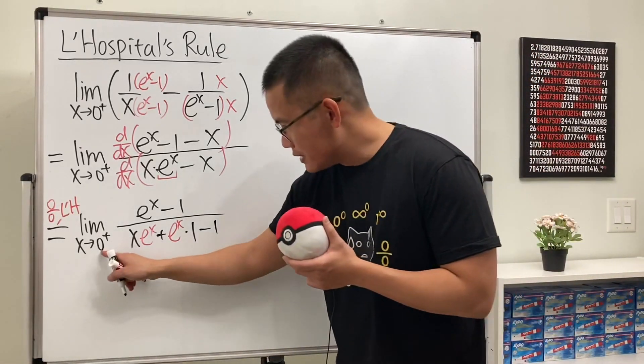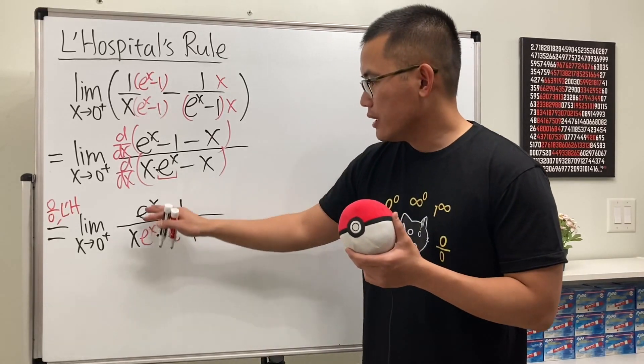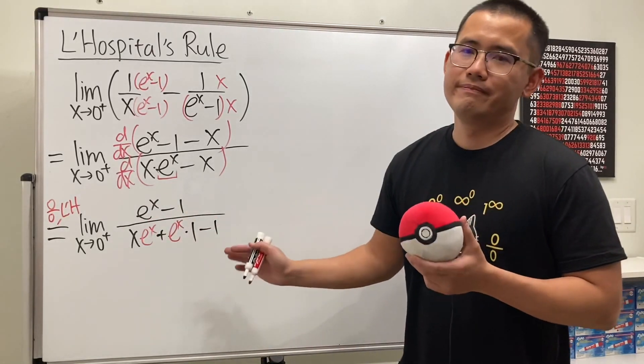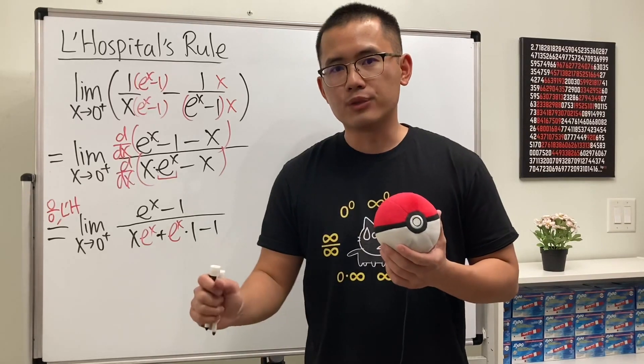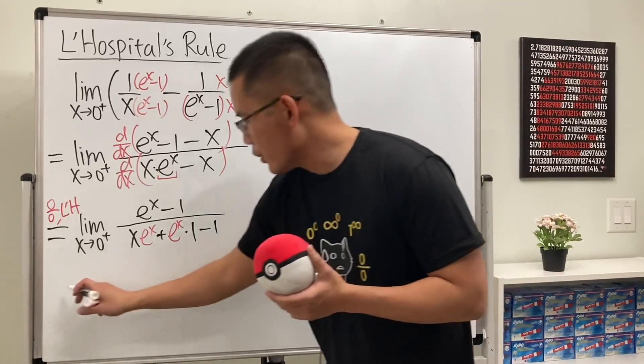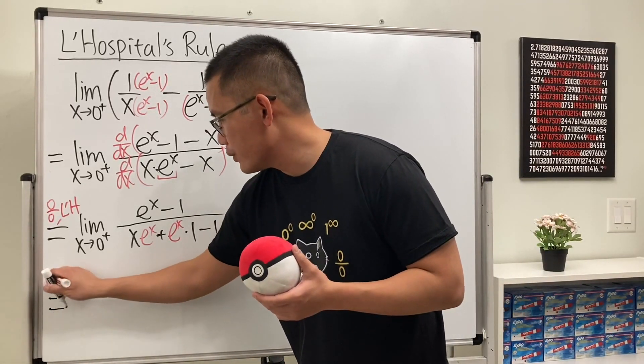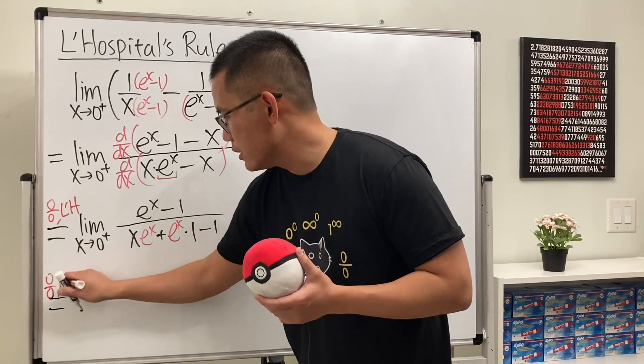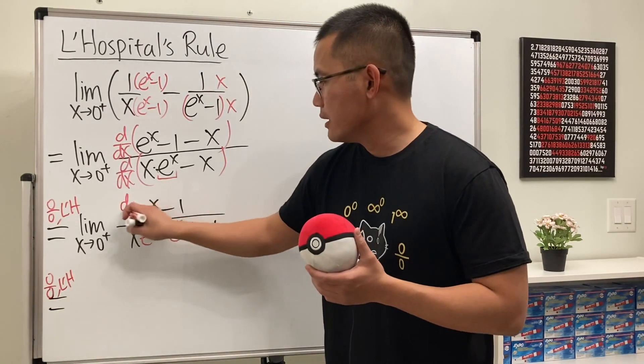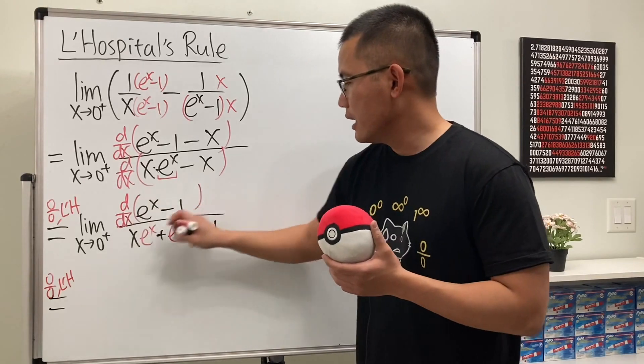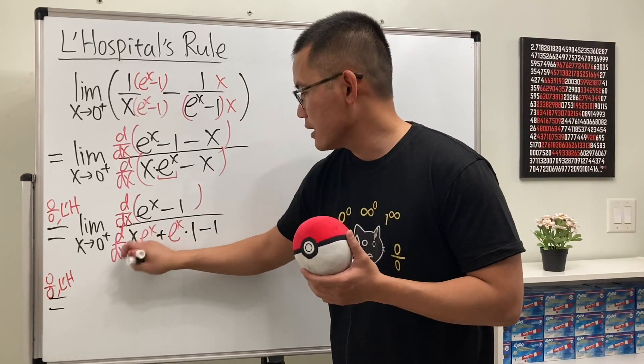Not really, because when we put 0 plus into all the x's, we get 0 over 0. But it's okay, because we can do L'Hôpital's rule one more time. So 0 over 0, L'Hôpital's rule again. d dx here, and then d dx here.